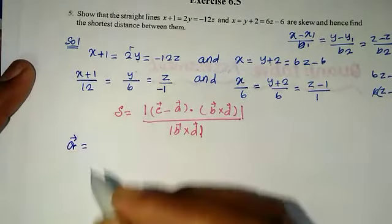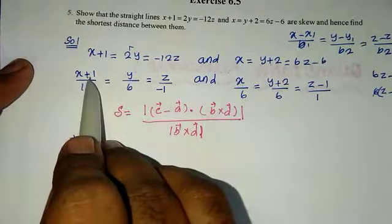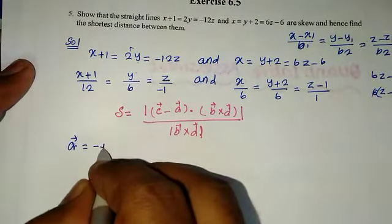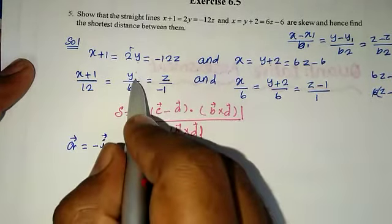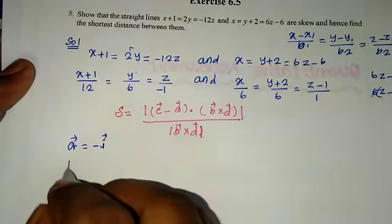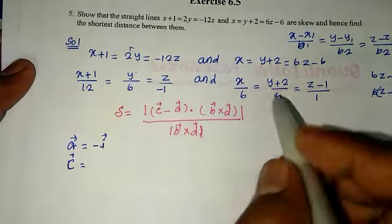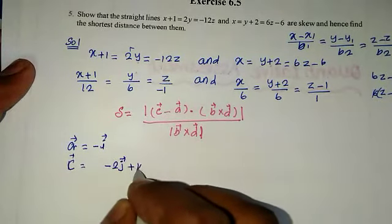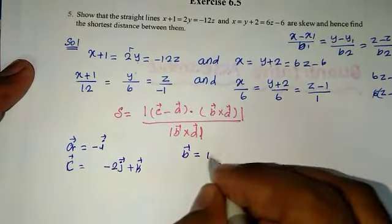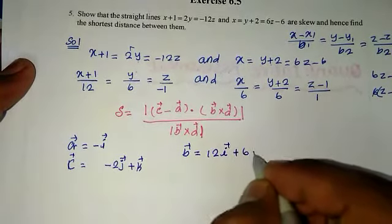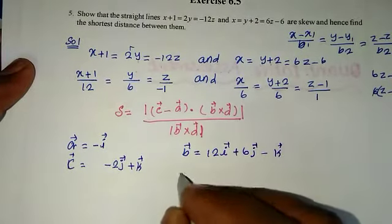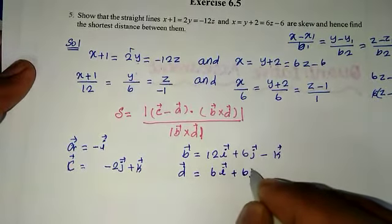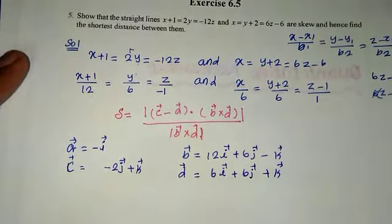From the first line, the position vector a vector is minus i vector. From the second line, the position vector c vector is minus 2j vector plus k vector. The direction vector b vector of the first line is 12i vector plus 6j vector minus k vector. The direction vector d vector of the second line is 6i vector plus 6j vector plus k vector.